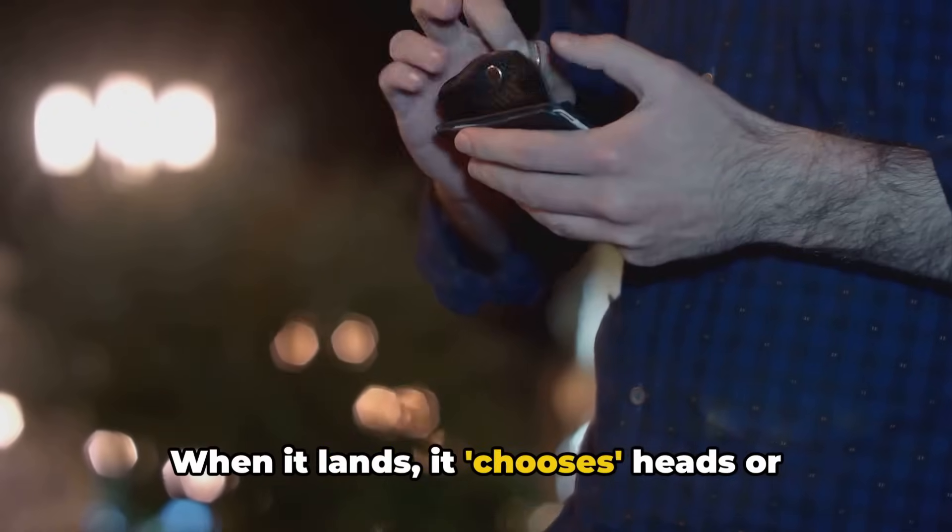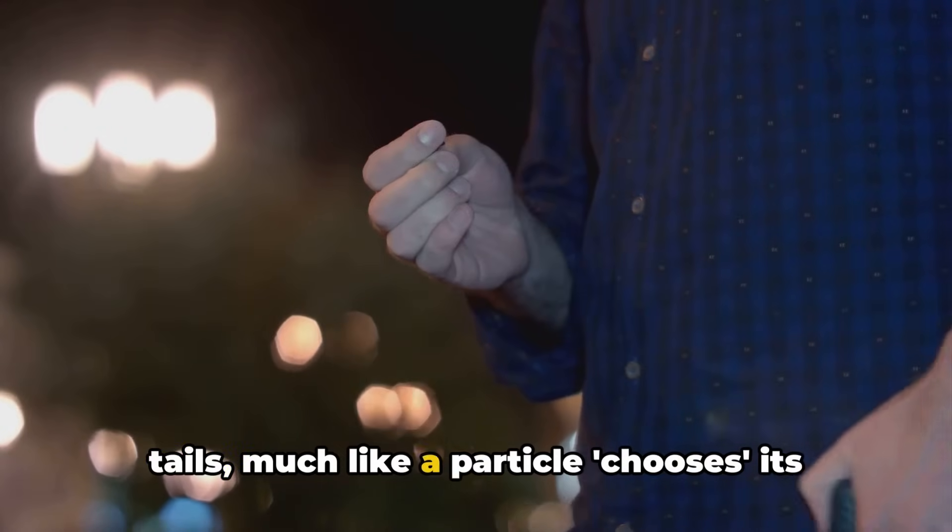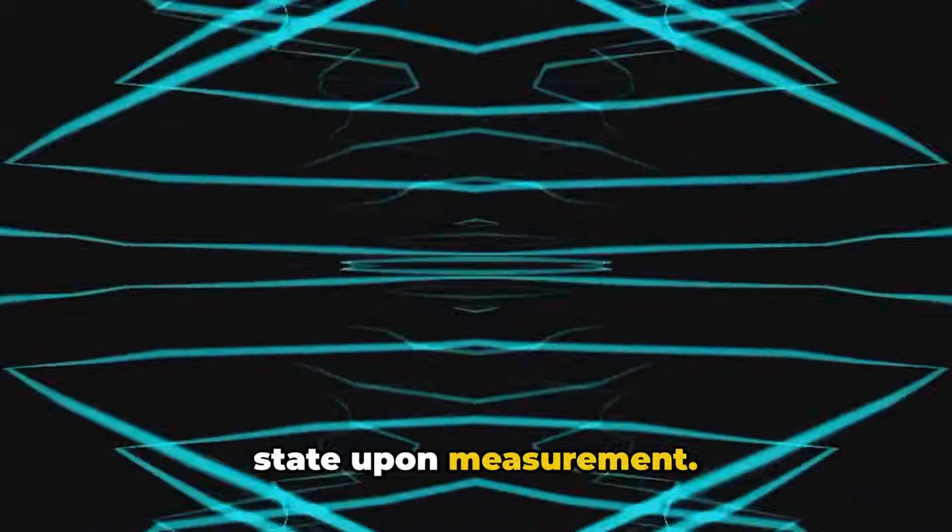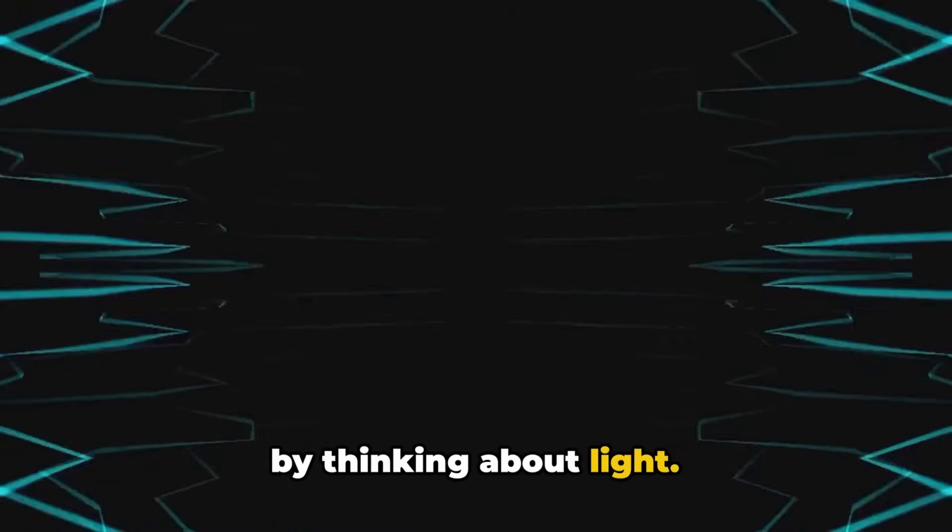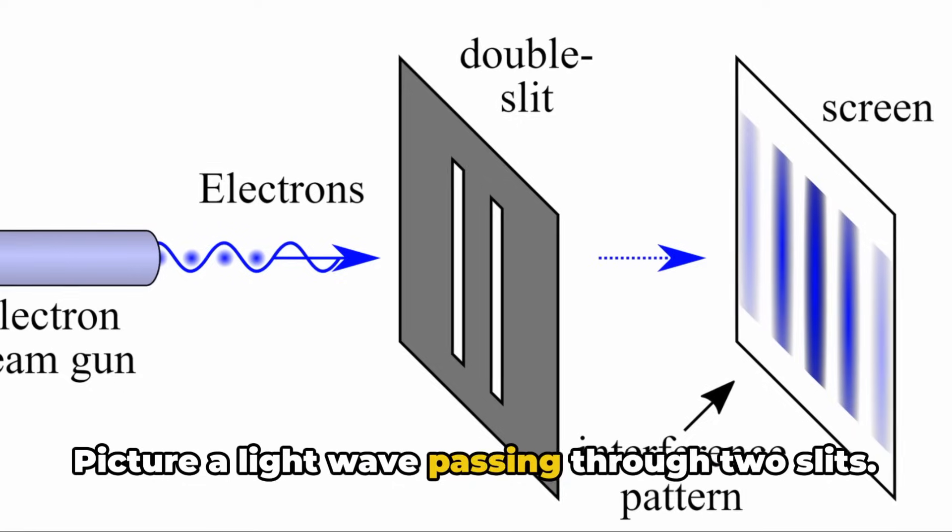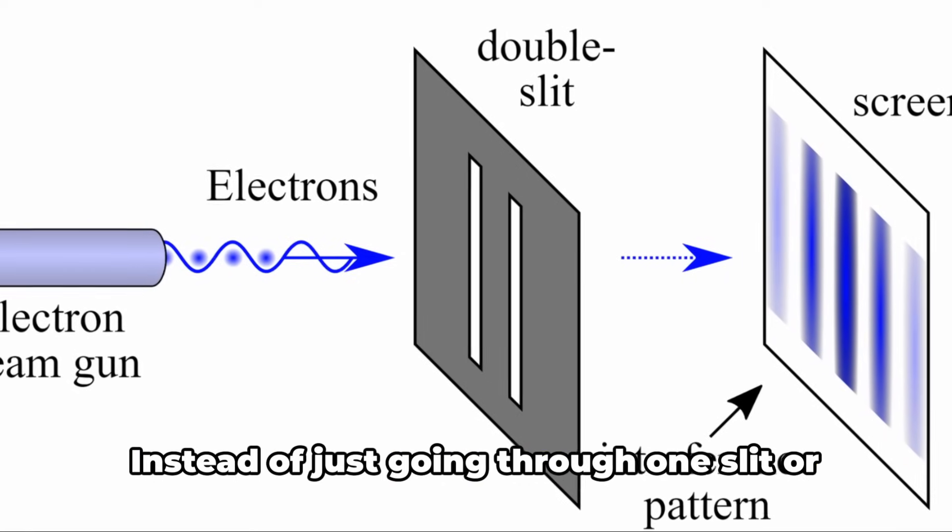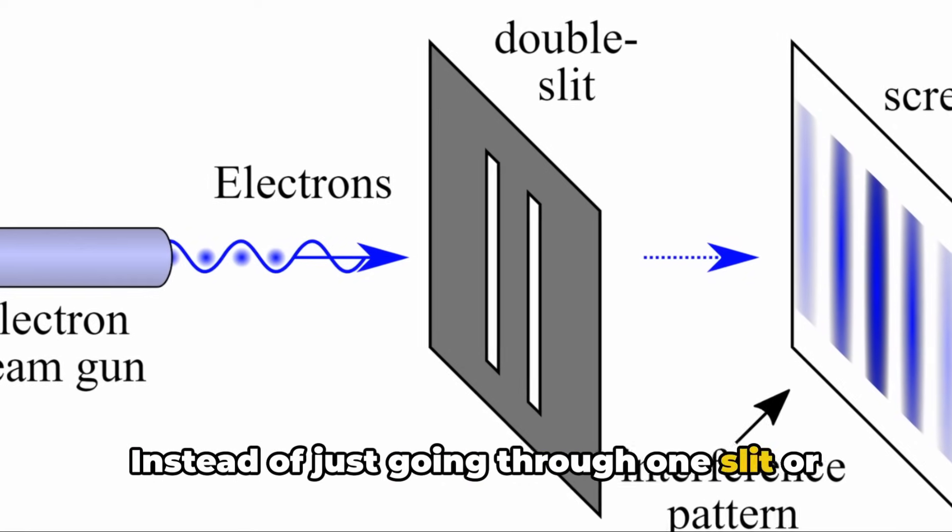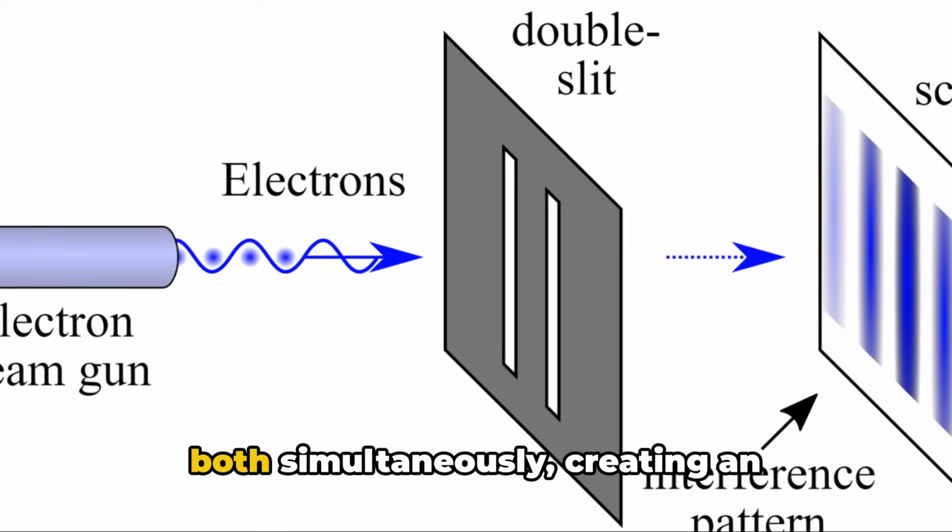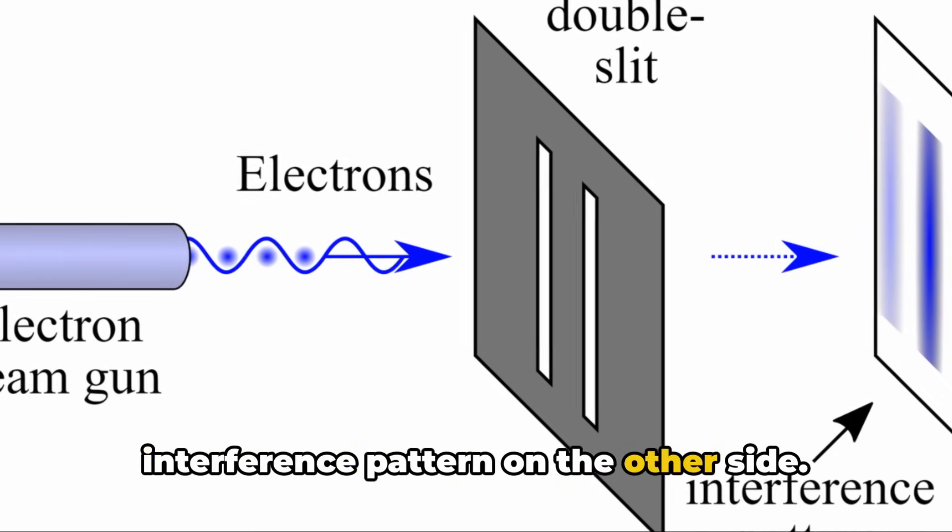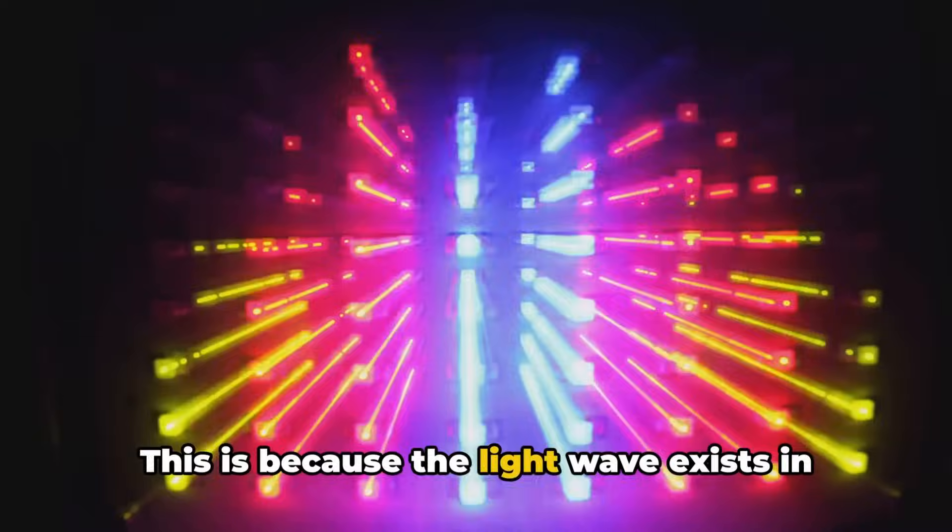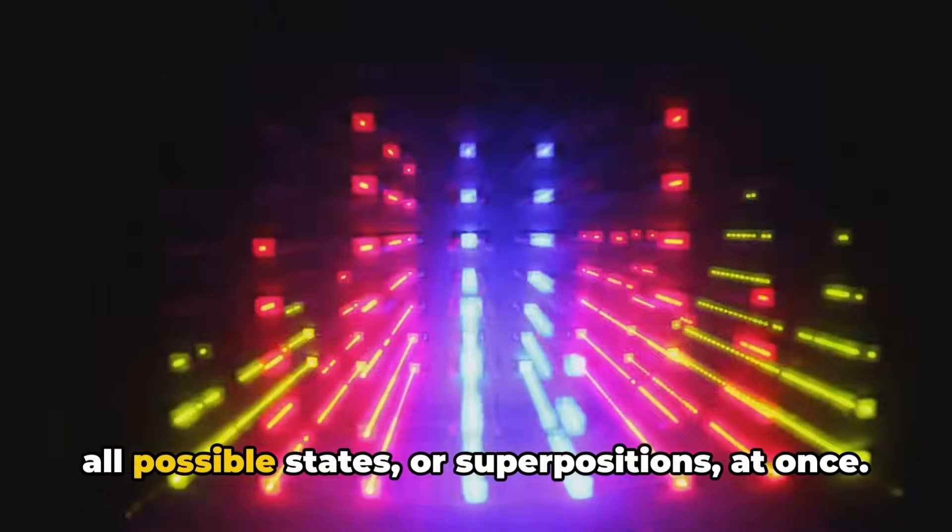Another way to visualize superposition is by thinking about light. Picture a light wave passing through two slits. Instead of just going through one slit or the other, the light wave goes through both simultaneously, creating an interference pattern on the other side. This is because the light wave exists in all possible states, or superpositions, at once.